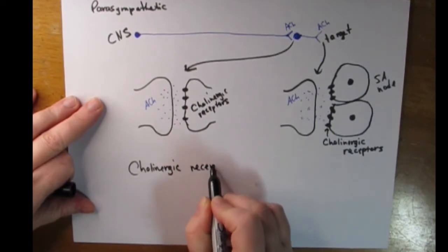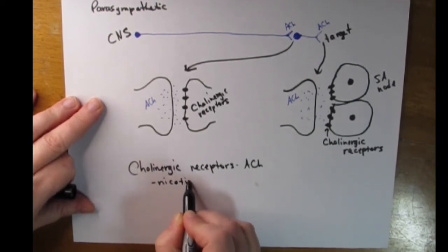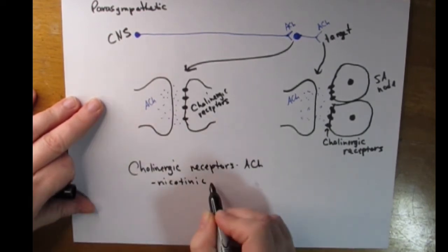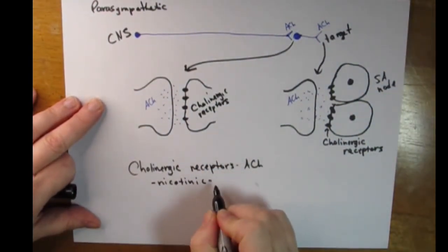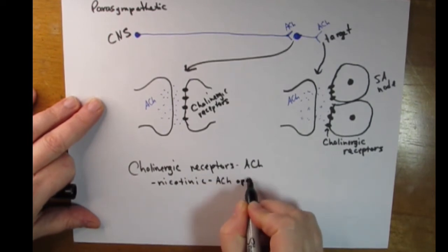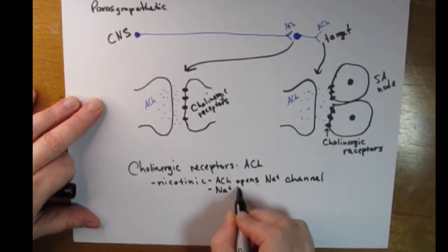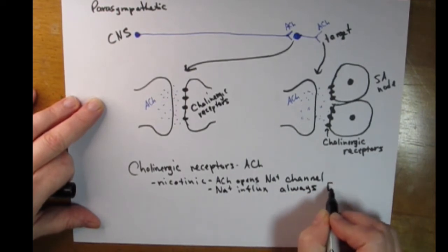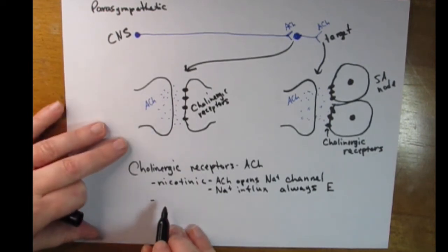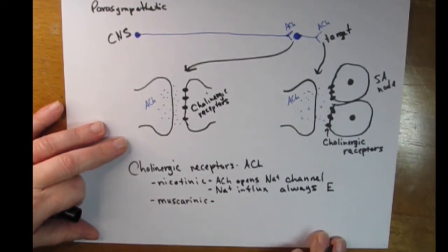Now let's talk about receptors. We start with the parasympathetic side, where the only type of receptor is the cholinergic receptor. There are two subtypes of cholinergic receptors. The first is nicotinic: a nicotinic receptor is where acetylcholine interacts and opens up a sodium channel. When a sodium channel is open, sodium influxes into the cell — this is always excitatory, it always raises the membrane potential.